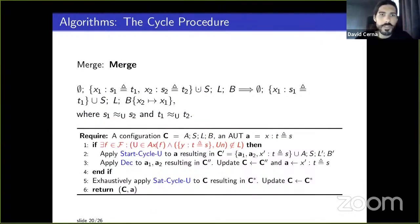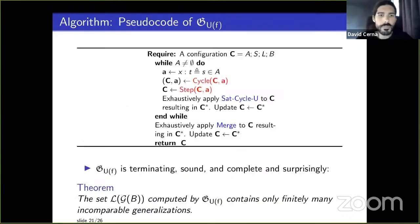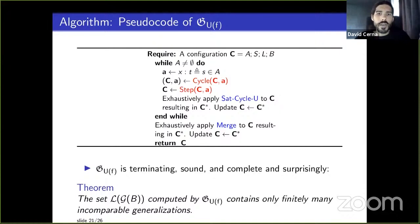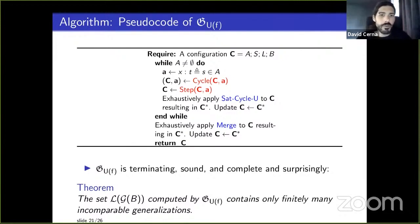The new algorithm for the one-unital fragment adds one extra step: a cycling procedure — after cycling, decompose, then exhaustively apply saturate_cycle until it can no longer be applied, continuously. The algorithm runs the cycling procedure followed by step, then exhaustively applies sat_cycle, then finally merges AUPs that are the same. Surprisingly, even though the grammar can have infinitely many terms, the language of the grammar has only finitely many incomparable elements — the one-unital fragment is finitary.